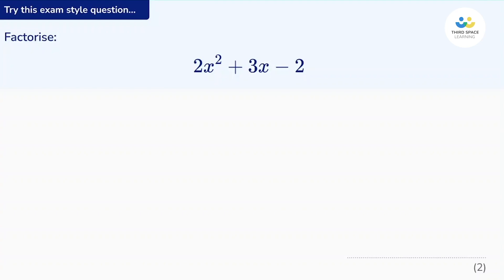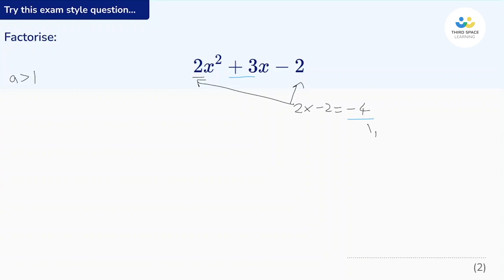We notice this is a quadratic, and a — the coefficient of the x squared term — is greater than 1; it's 2 in this case. So to factorise this, we're going to take these outer numbers and multiply them together. So 2 multiplied by negative 2 is negative 4. We need a pair of numbers that will add to give positive 3, and that same pair should multiply to give negative 4. So let's start by writing out the factors of 4: that's 1 and 4, and 2 and 2.